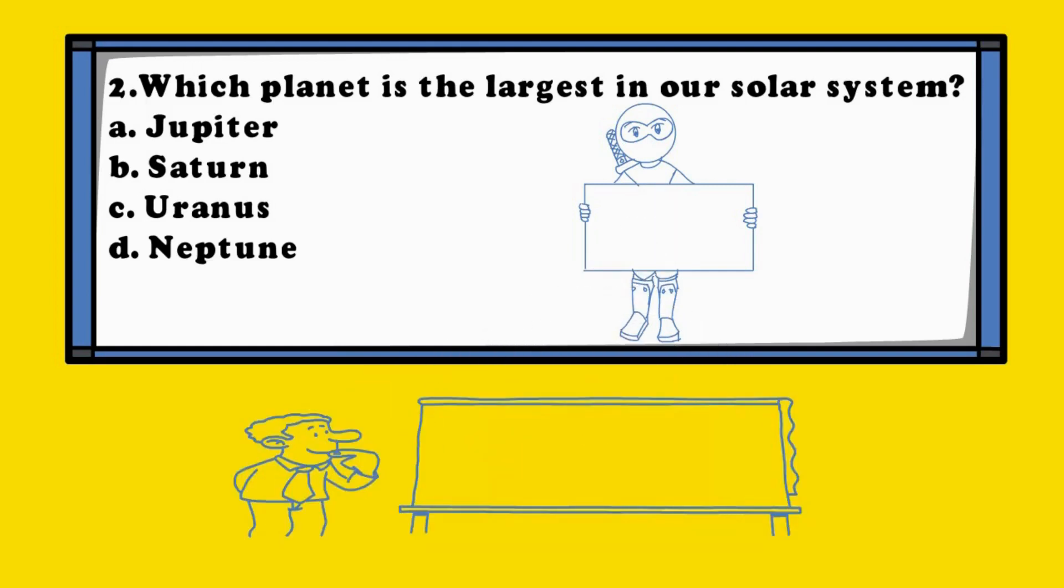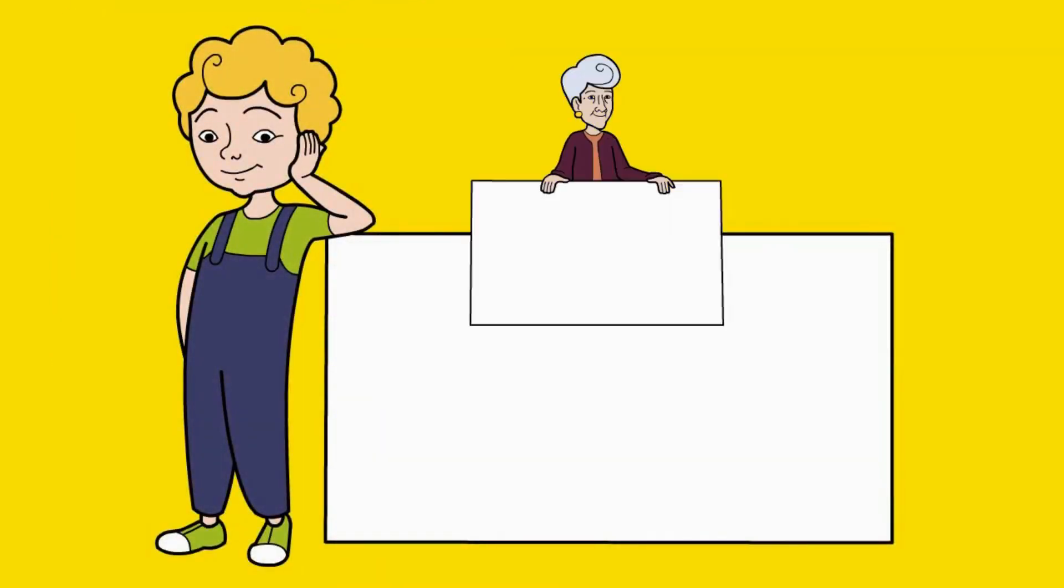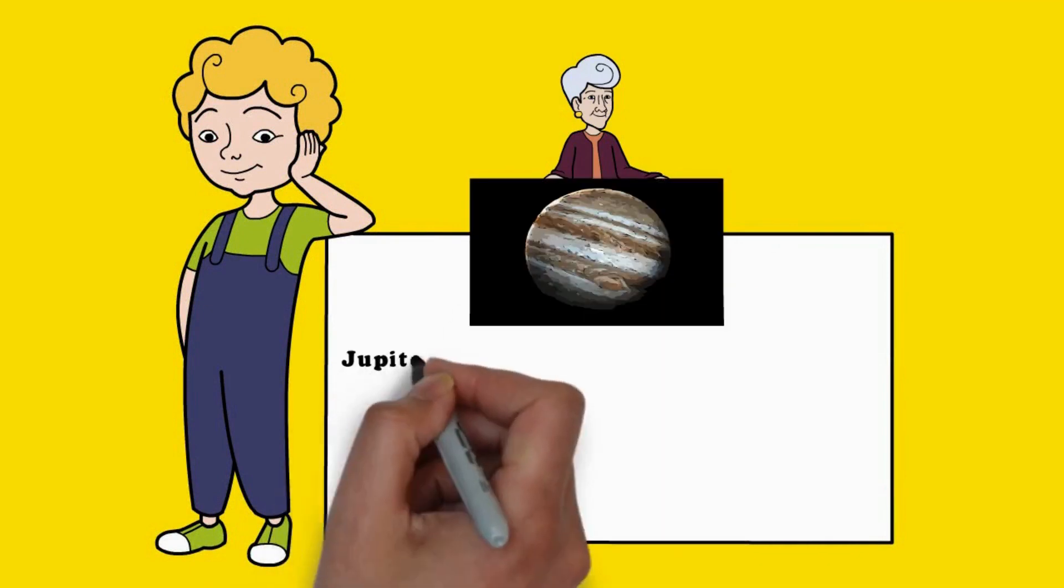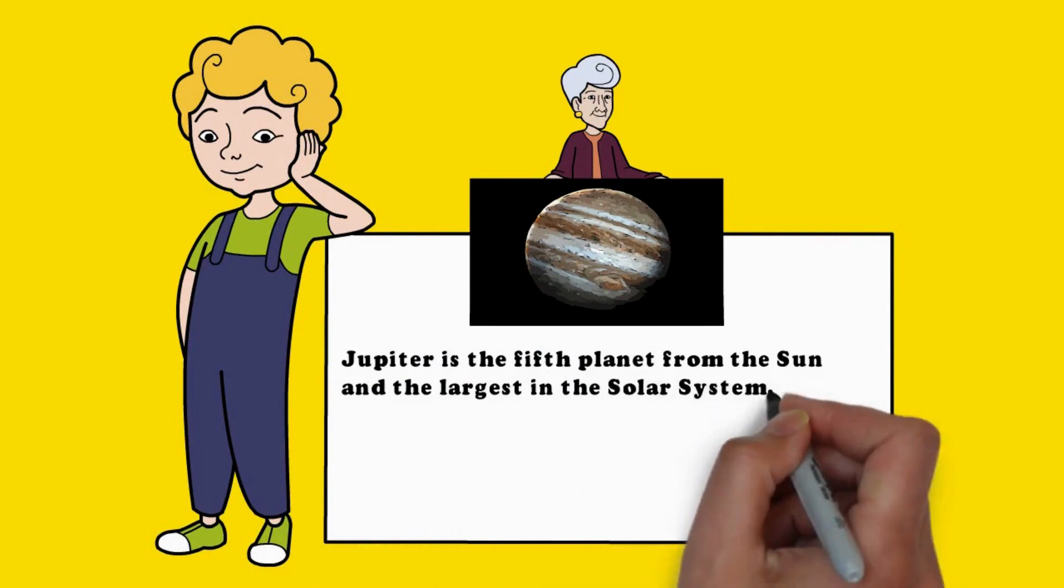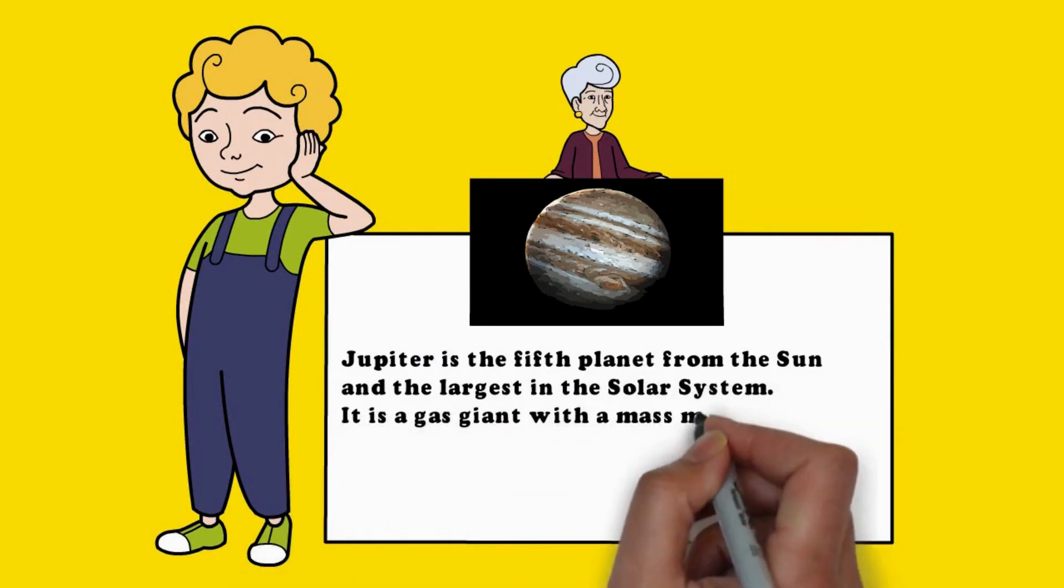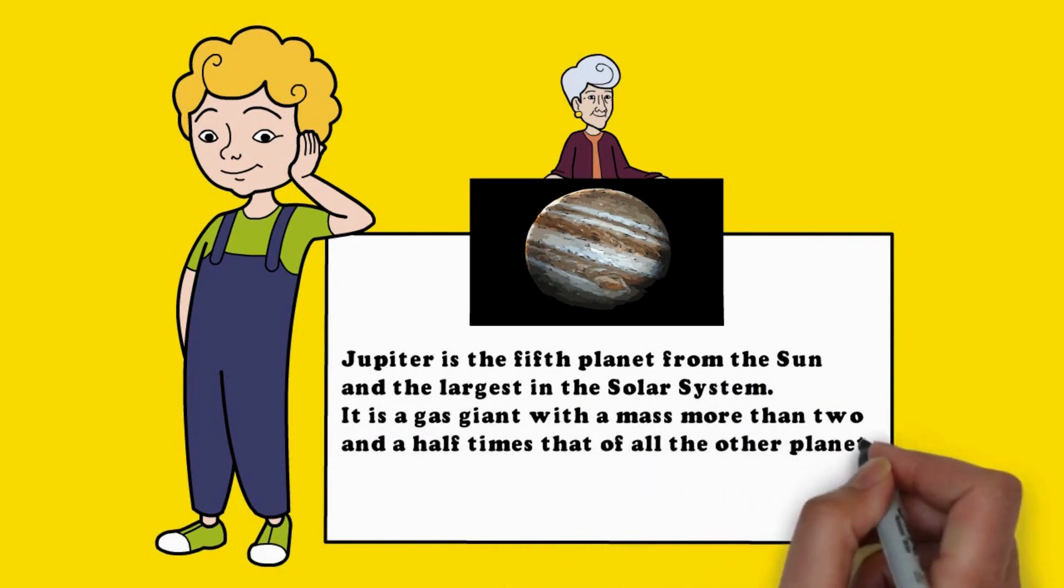The answer is A. Jupiter. Jupiter is the fifth planet from the Sun and the largest in the solar system. It is a gas giant with a mass more than two and a half times that of all the other planets in the solar system.